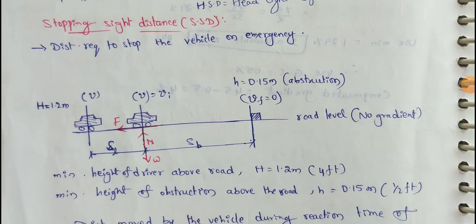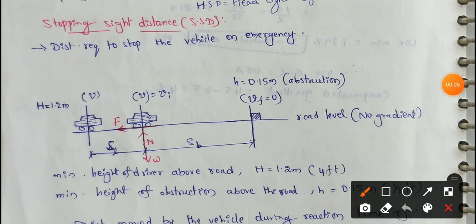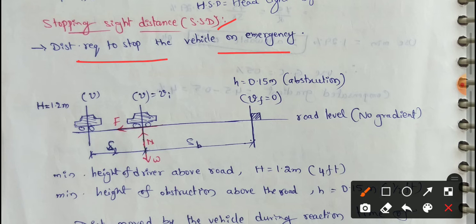Next topic: Stopping Sight Distance. So, this is simply indicated as SSD. If a vehicle is moving, it is the distance required to stop the vehicle in an emergency.